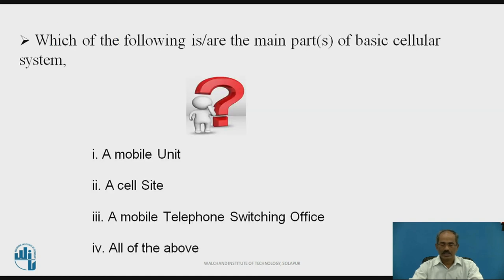In this slide we shall see a small MCQ question. Which of the following is or are the main parts of the basic cellular system? The options are: first, a mobile unit; second, a cell site; third, a mobile telephone switching office; and fourth, all of the above. Pause the video and try to think and guess your answer. The correct answer for this question is D — all of the above — because all three are parts of the cellular system.